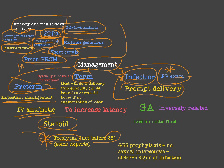Focus on IV antibiotics, steroids, expectant management, and Group B Streptococcus prophylaxis. You must give Group B Streptococcus prophylaxis in all conditions — preterm, term, infection, and PV examination. You also have to stop sexual intercourse to prevent introducing infection, as it is a risk factor.